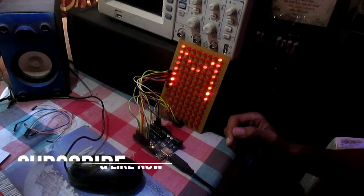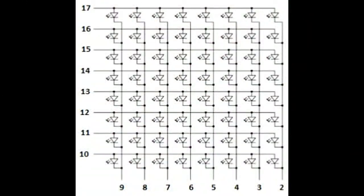Let's get started with hardware. This is the circuit diagram of the LED matrix display. At the row we have connected Arduino pins 10 to 17, where pin 14 is A0, 15 is A1, 16 is A2, and 17 is A3 of the analog pins. At the column we have connected Arduino pins 2 to 9.